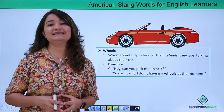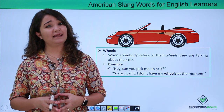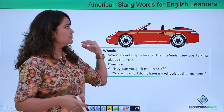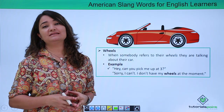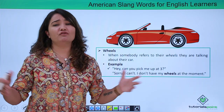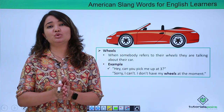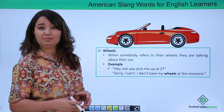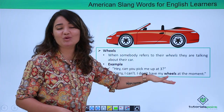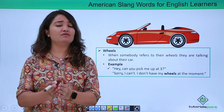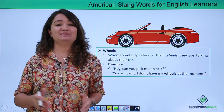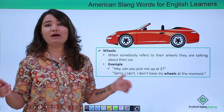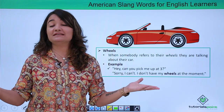Wheels — yet another very commonly used American slang, and it means a car. We all know wheels as tires, but in American slang, wheels is used to refer to a car. For example: 'Hey, can you pick me up at three?' 'Sorry I can't, I don't have my wheels at the moment.' When someone says they don't have their wheels, they mean they don't have their car with them. So wheels means your car.